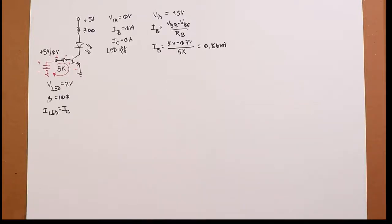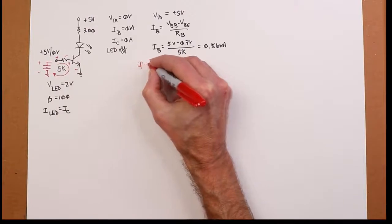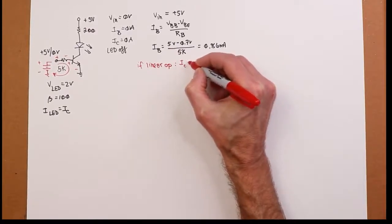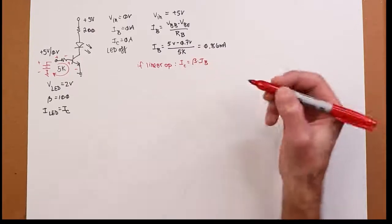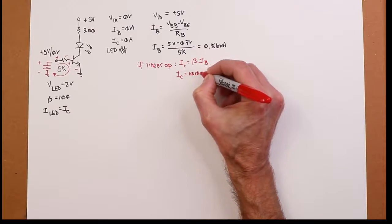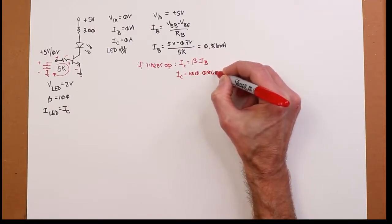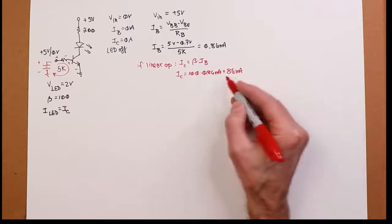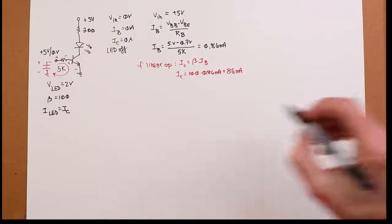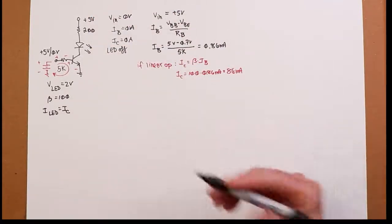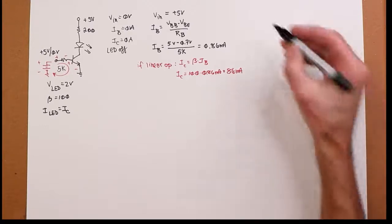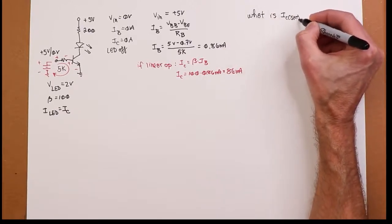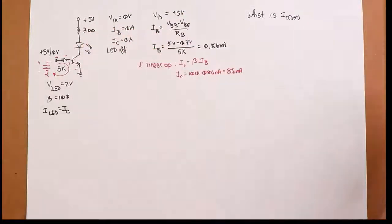Now, if this was linear, and this is important to remember, if this was a linear operation, what we would do is say collector current equals beta times IB. And if we did that, we'd say, well, it's 100 times the 0.86 milliamps, and we'd get 86 mils. Well, that's not going to happen. I mean, 86 mils through 200 ohms is going to produce a voltage way bigger than 5 volts. So what ends up happening? We must be in saturation. So the question is, what is IC sat?